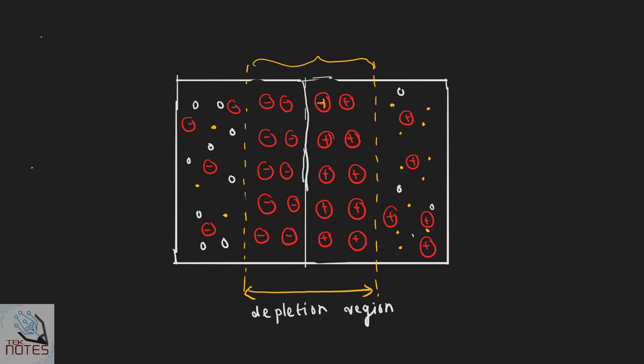The donor ion is positively charged, and the acceptor ion is negatively charged. At this junction, one side is positive (donor ion) and the other side is negative (acceptor ion). This junction has a potential difference, and this particular region is called the depletion region.